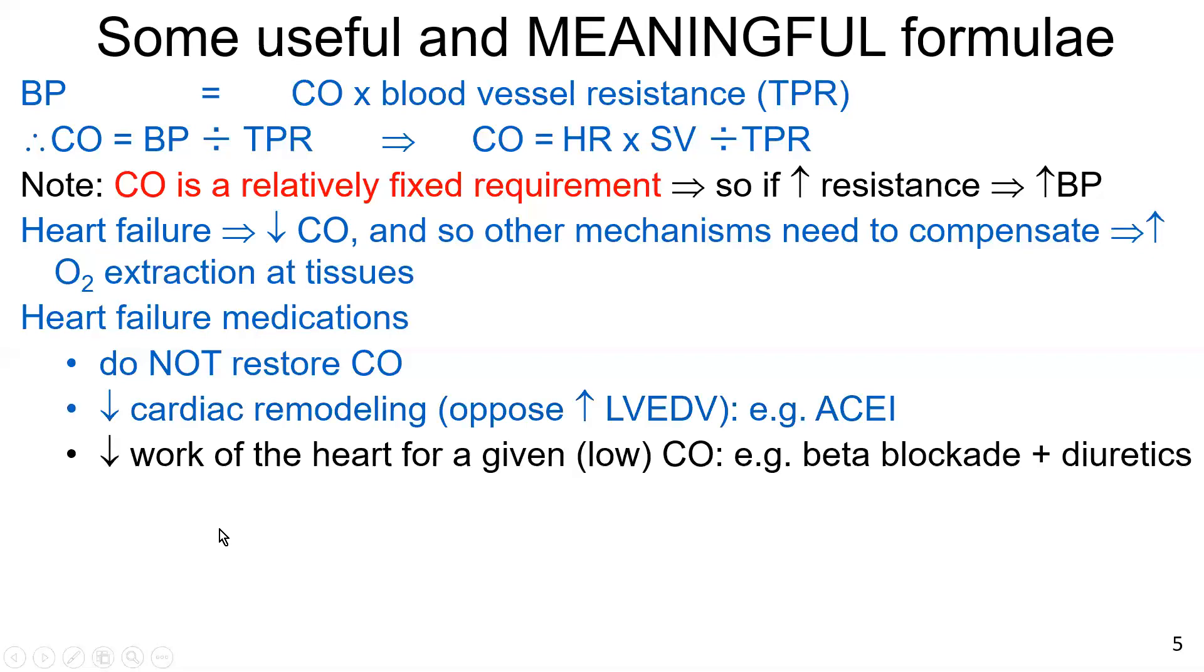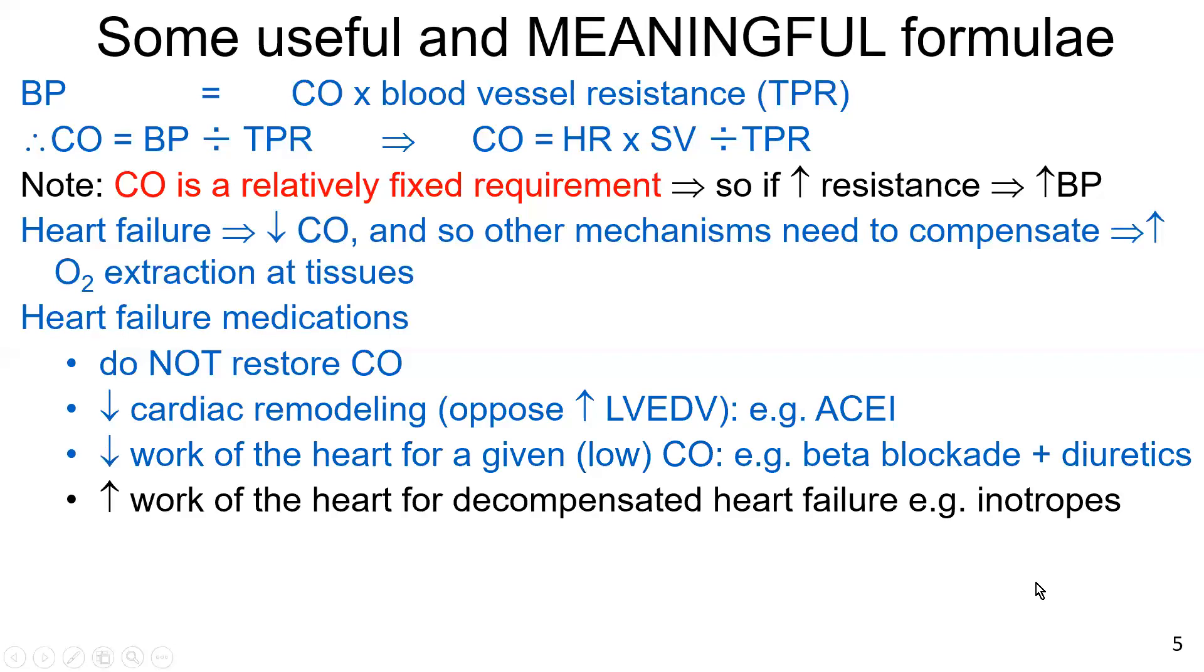Decrease work of the heart for a given low cardiac output. Beta blockers and diuretics do this. Diuretics by, again, opposing increases in left ventricular end-diastolic volume. In other words, pushing people to the left on the Frank-Starling law of the heart and keeping people safe in terms of left ventricular end-diastolic volume not being too high. And beta blockade, of course, reduces the work of the heart by decreasing both heart rate and the pumping action of the heart in the form of stroke volume.